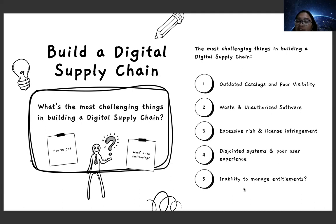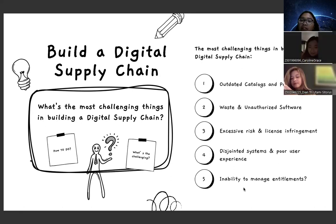Number three, excessive rates and license infringement. Number four, disjointing systems and poor user experience. Number five, inability to manage entitlement.